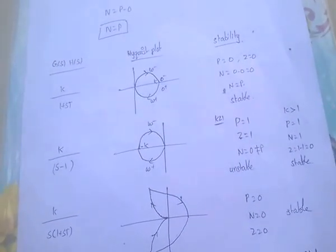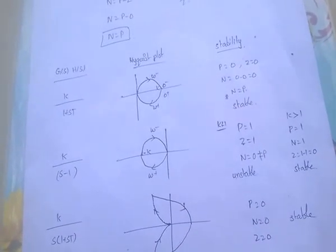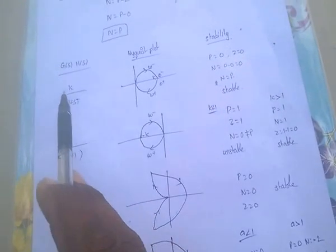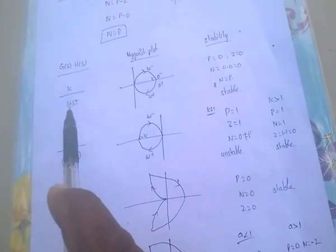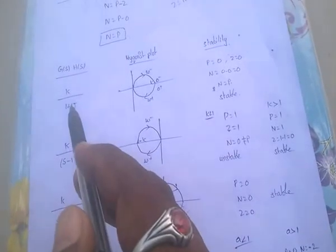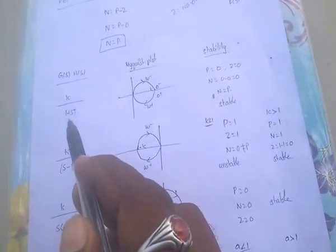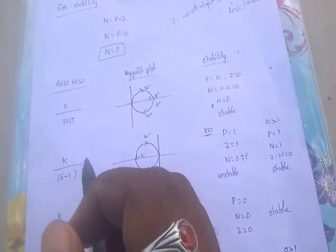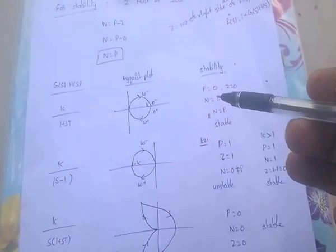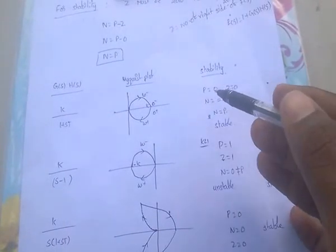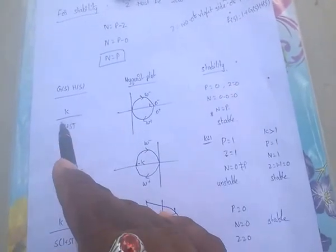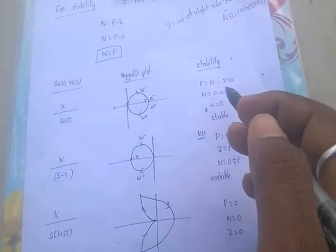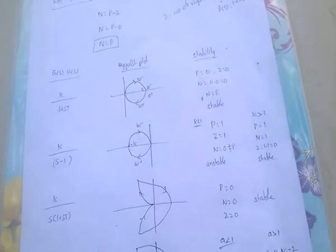For G(S)·H(S) = K / (1 + ST): there are no right-side poles, so P = 0, and also no right-side zeros, so Z = 0. Since Z = 0, the system is stable.